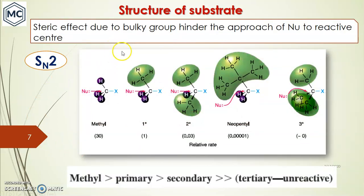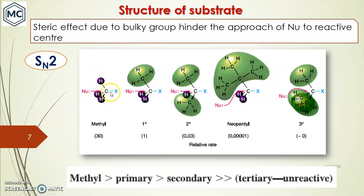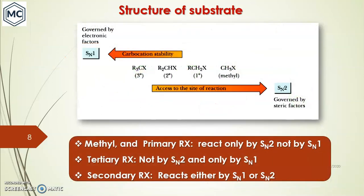For SN2, the reaction rate depends on the bulkiness of the substrate. Bulky groups hinder the free approach of the nucleophile. In tertiary substrates, three methyl groups hinder the approach of the nucleophile to the carbon atom, whereas in methyl halide only small hydrogen atoms are present and the nucleophile can freely approach. The reaction rate for methyl is about 30 times faster than for tertiary.